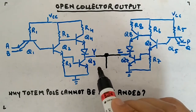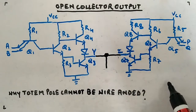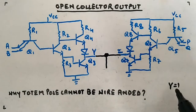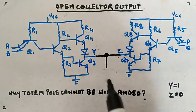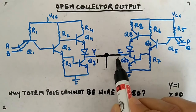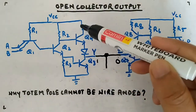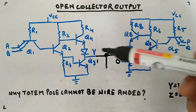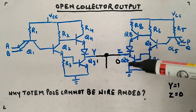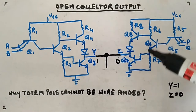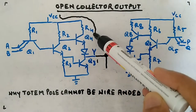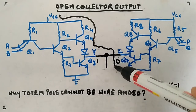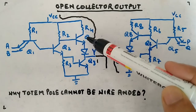Let's say Y is equal to 1 — meaning from this circuit you are getting logic 1 output — and from this circuit you are getting output 0. So this upper part of the totem pole will be ON here, which is why Y equals 1, and on this side the lower part is ON, which is why it is getting 0.